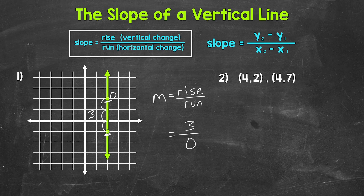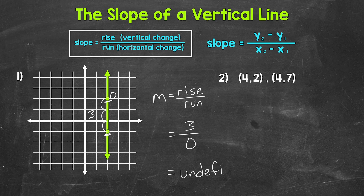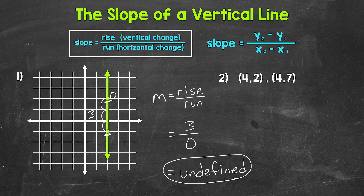So our slope equals the rise over the run: three over zero. Whenever we have a fraction with a denominator of zero, we have something that is undefined, because we can't divide by zero. So whenever we have a vertical line, we always end up with a run of zero, and therefore a denominator of zero — giving us an undefined slope. The y values for a vertical line change, but the x values do not, so we always get that run of zero.